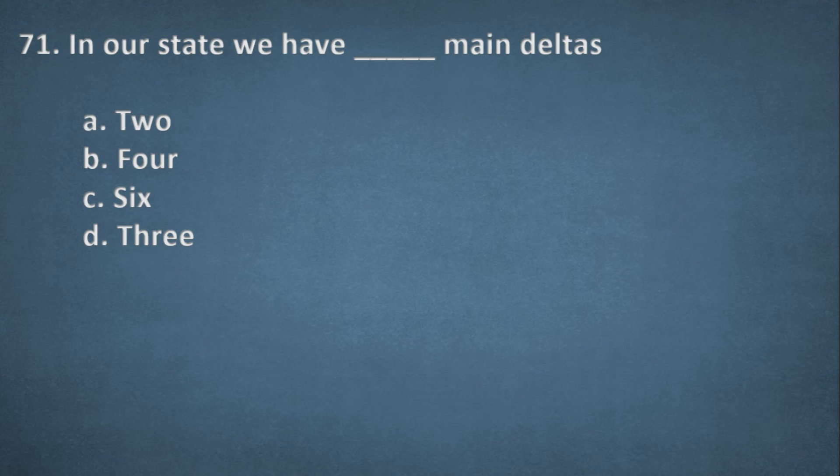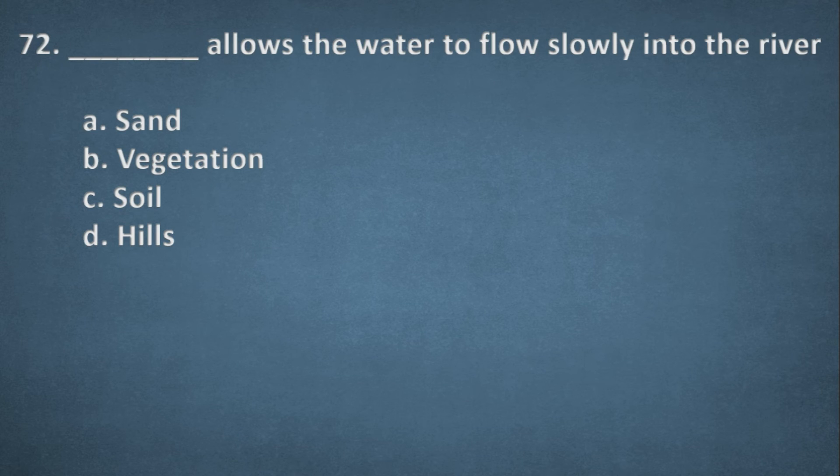Next one. In our state, we have dash main deltas. Options: Two, Four, Six, Three. The right option, Option A, Two deltas. Next one. Dash allows the water to flow slowly into the river. Options: Sand, Vegetation, Soil, Hills. The right option, B, Vegetation.